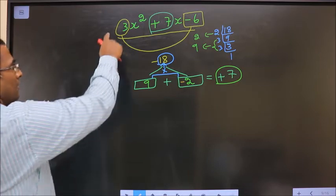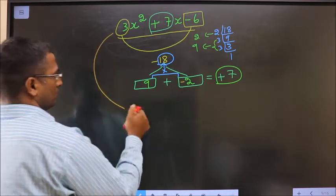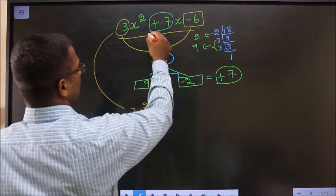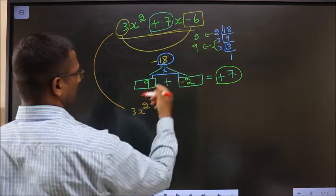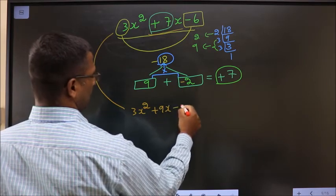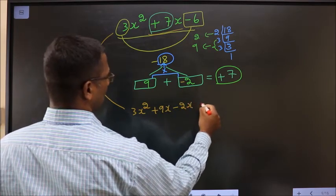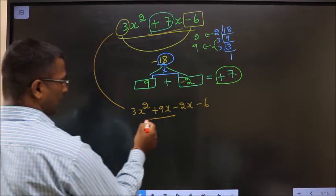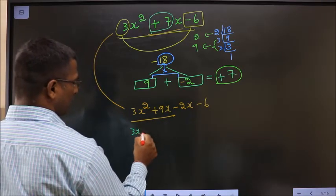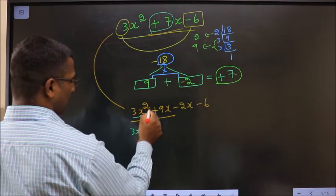Now, this will change to 3x square as it is. In place of 7x, now I will write 9x minus 2x minus 6. Now, what can I take common from these 2? 3x can be taken common.